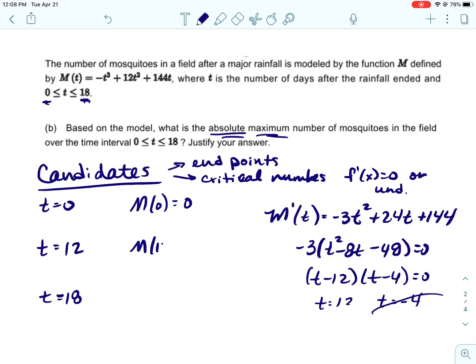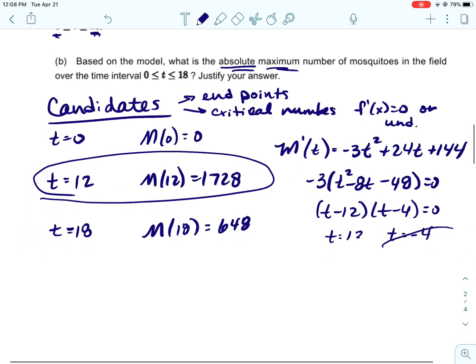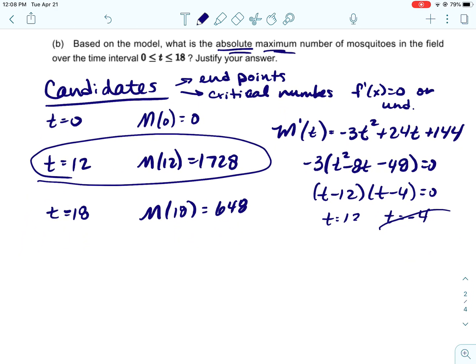So we have three candidates and then we're going to hold an election. When we hold the election, we plug those into the original function, the number of mosquitoes function. So when we put in 0, we get 0. We put in 12, we get 1,728, and then when we put in 18, we get 648. Okay, so it is obvious that candidate 12 won.